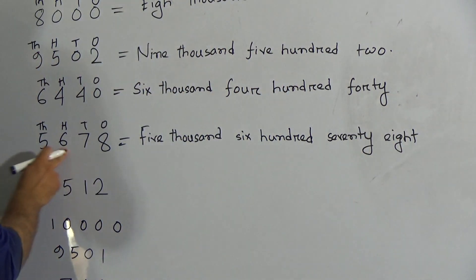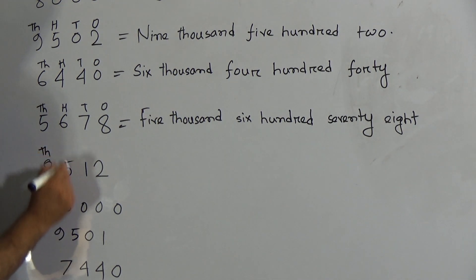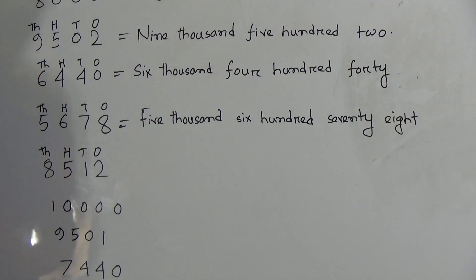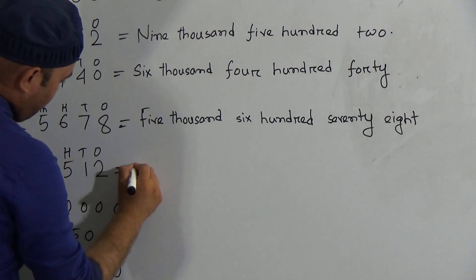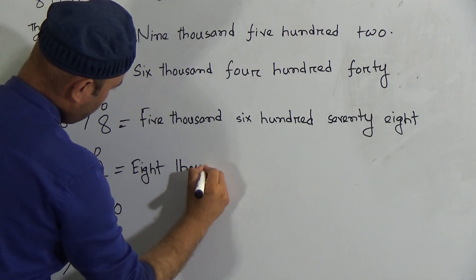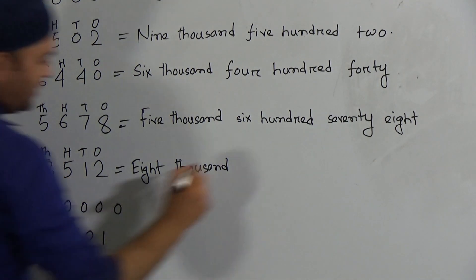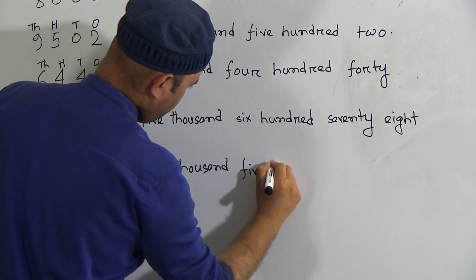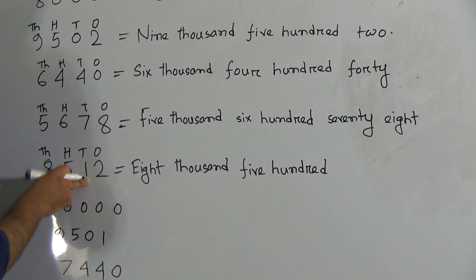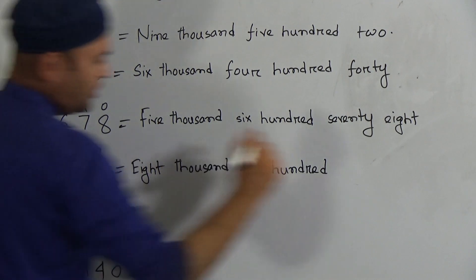The next one: 8 is in the thousand place, 5 is in the hundred place, 1 is in the tens place — meaning ten — and 2 is in the ones place, so the tens and ones together give twelve. In words this is eight thousand five hundred twelve.